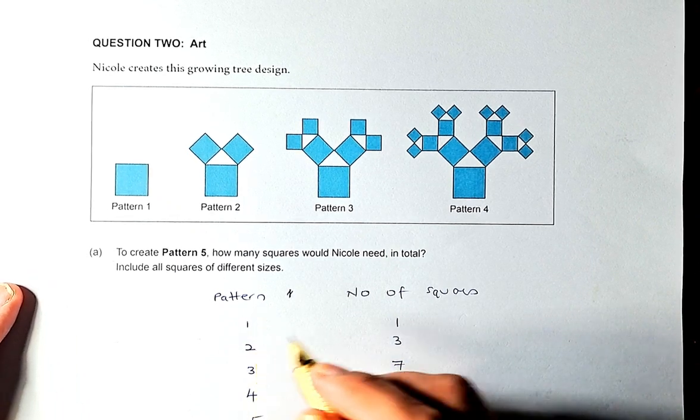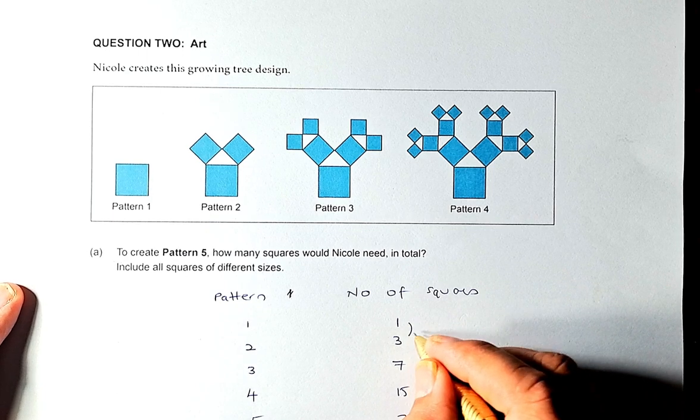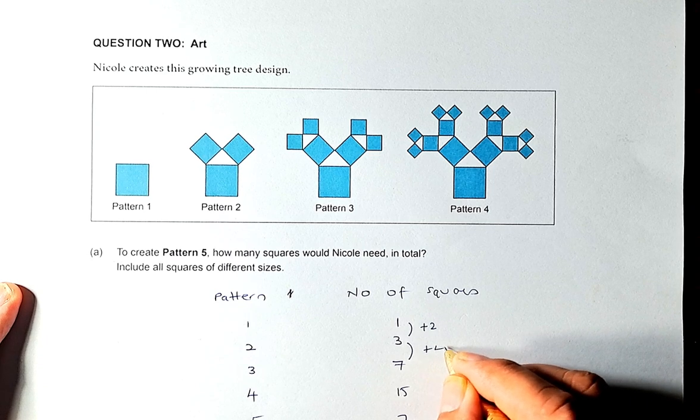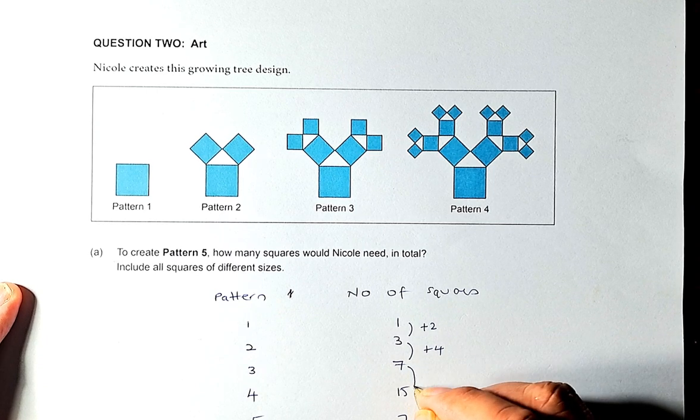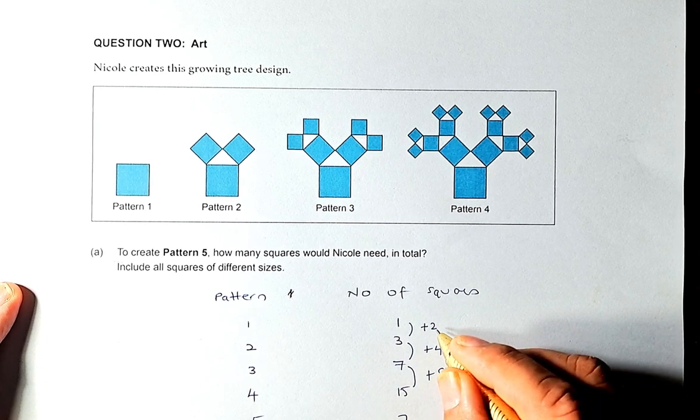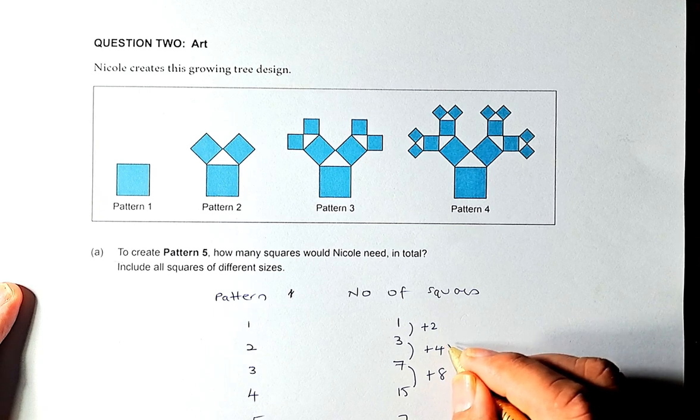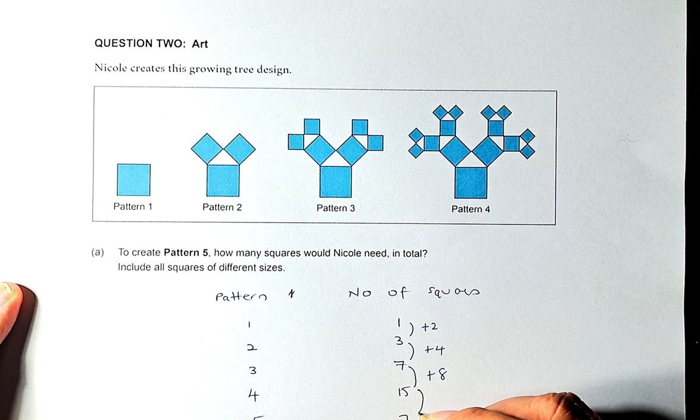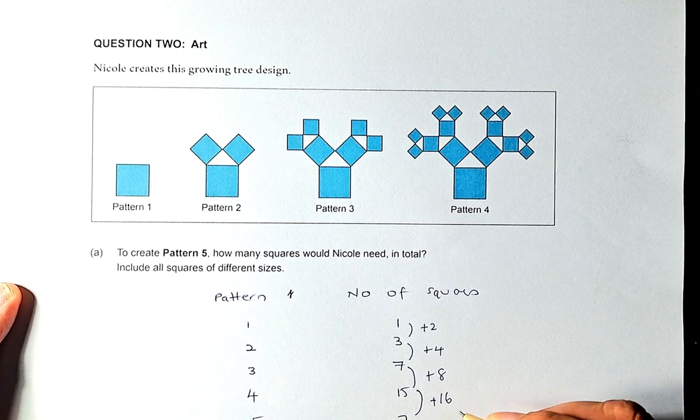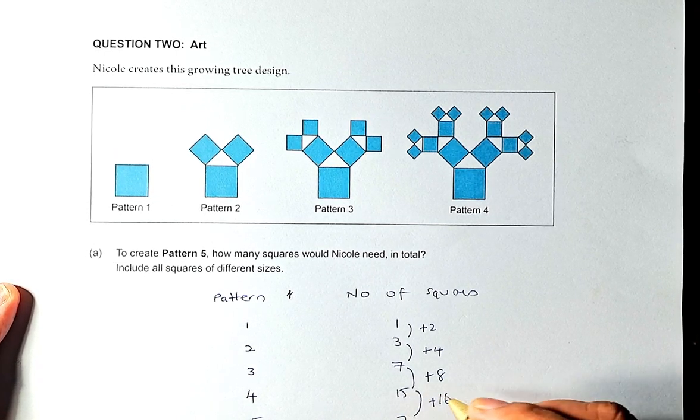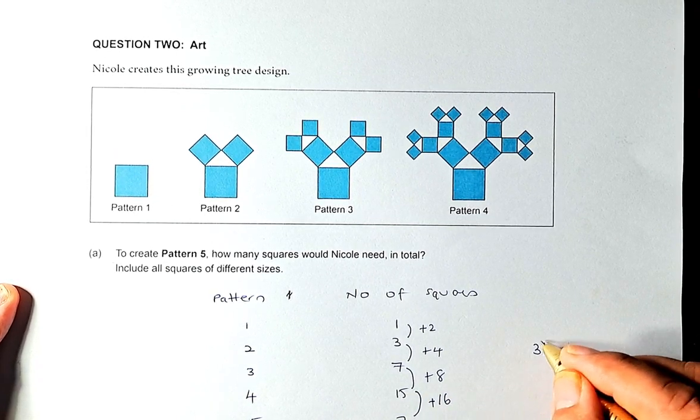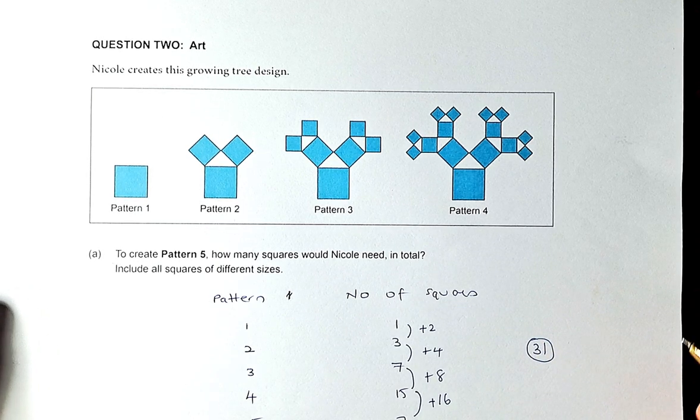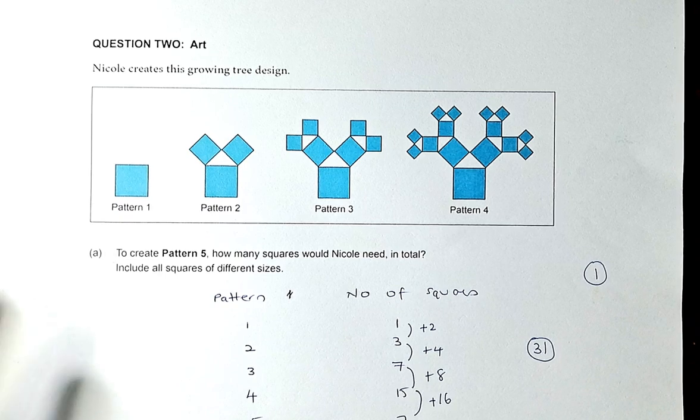From pattern 1 to 2, you get 1 to 3, you plus 2. From pattern 2 to 3, you plus 4. And then from pattern 3 to 4, you plus 8. So you can see it increased by double each time: plus 2, plus 4, plus 8. And of course the next one, from pattern 4 to 5, we're going to plus 16. So the number of squares is going to be 15 plus 16 and the answer is 31. I believe that will be outcome number 1 in this paper.